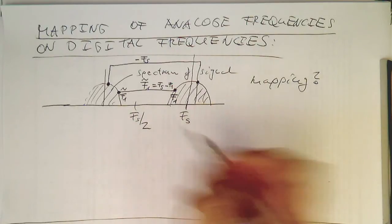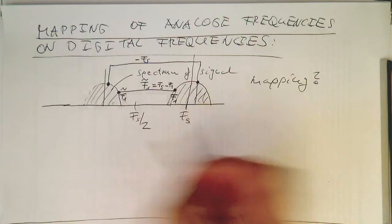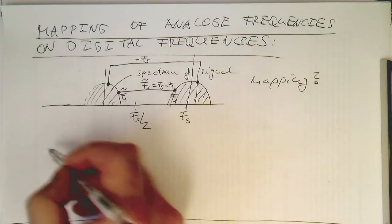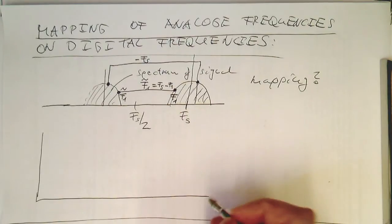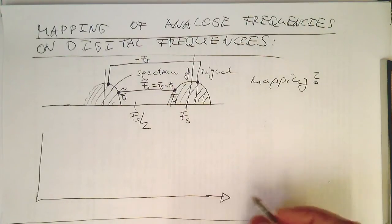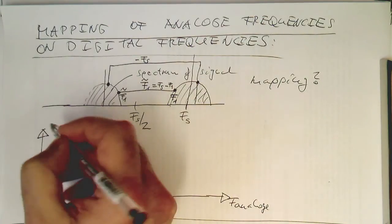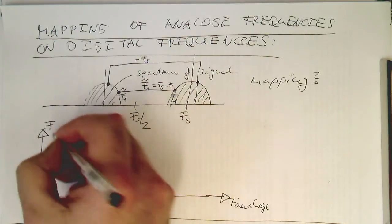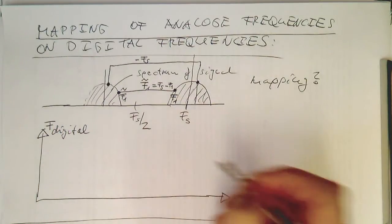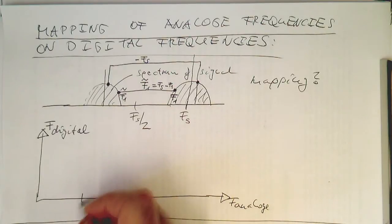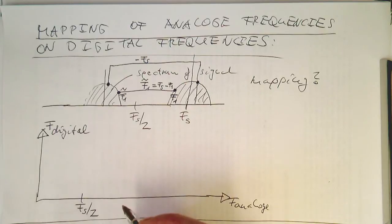So now with this idea here, we can draw a diagram where we have our F analog here and our F digital here. So if we put our Fs/2 here, that's our Nyquist frequency here.